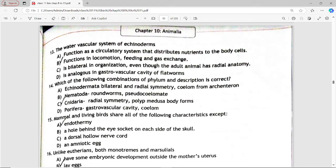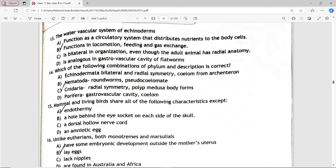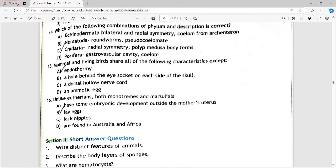Next is: which of the following combination of phylum and description is correct? Options are Echinodermata bilateral and radial symmetry coelom from archenteron, Nematoda roundworms and pseudocoelomate, Cnidaria have radial symmetry polyp and medusa body forms, Porifera gastrovascular cavity coelom. Answer is option C, phylum Cnidaria, they have radial symmetry, polyp and medusa body forms.